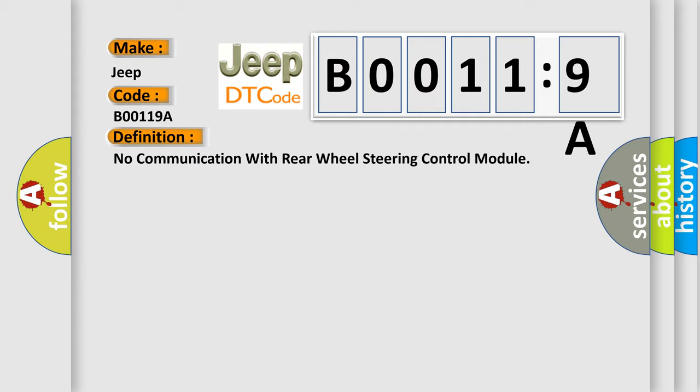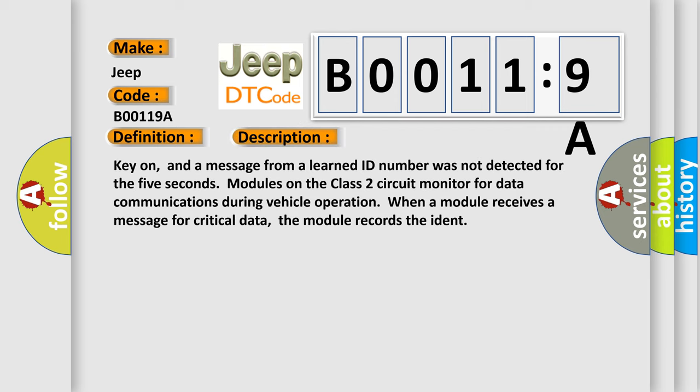And now this is a short description of this DTC code. Key on, and a message from a learned ID number was not detected for five seconds. Modules on the Class 2 circuit monitor for data communications during vehicle operation. When a module receives a message for critical data, the module records the IDENT.